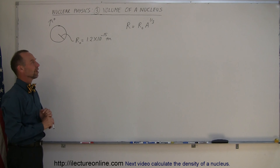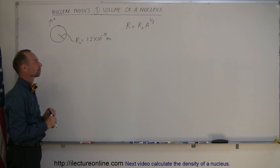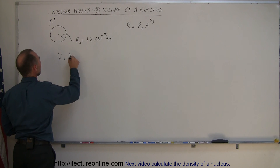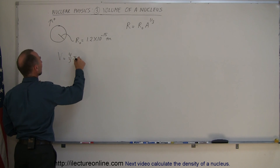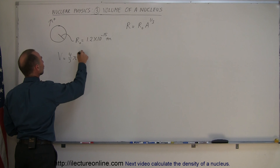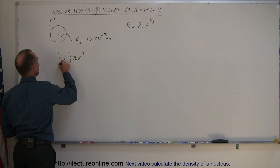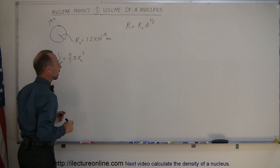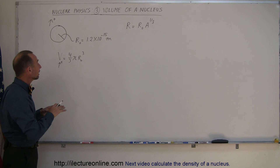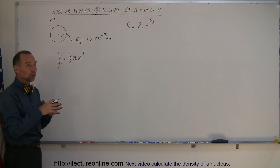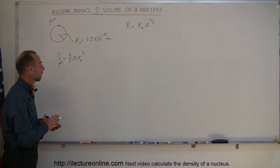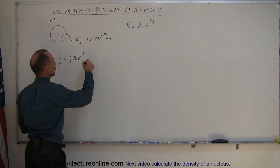How do we get volume out of that? The volume, by definition, is equal to 4/3 π r cubed, and so that would be the volume of a proton because we're using the radius of a proton. Of course, that's assuming the shape of a proton is spherical, and that's probably a good assumption.